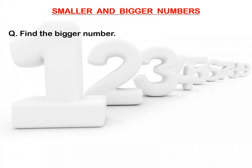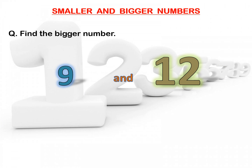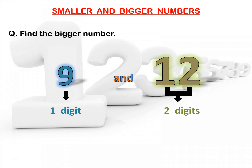Now, look at the next question: find the bigger number. The numbers are 9 and 12. Here, 9 is a one-digit number. And look at 12 — 1 and 2 came together to make 12, so 12 is a two-digit number. We know that the number with more digits is bigger. So, here 12 is the bigger number.